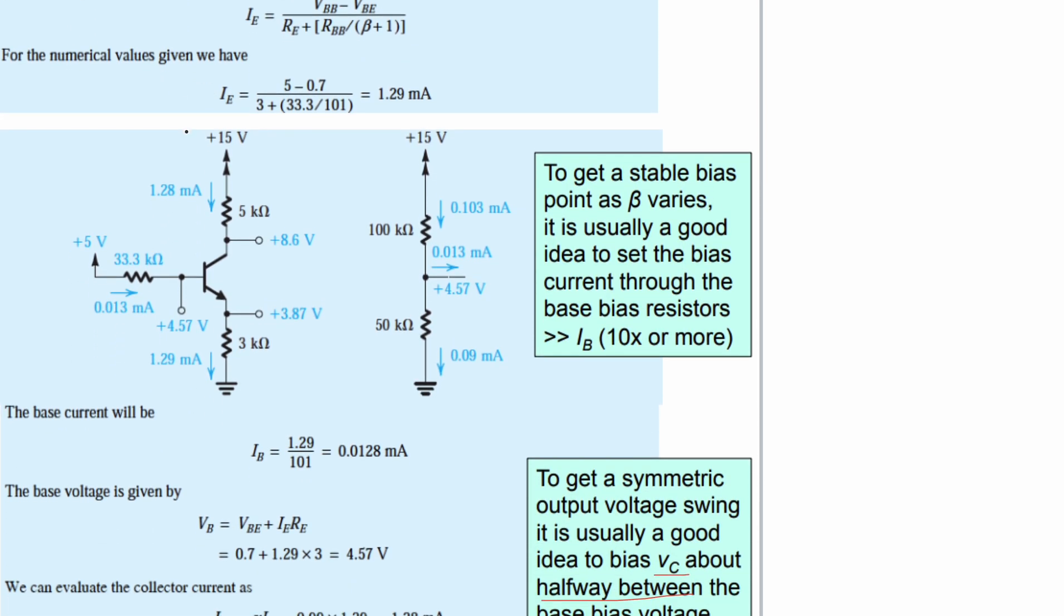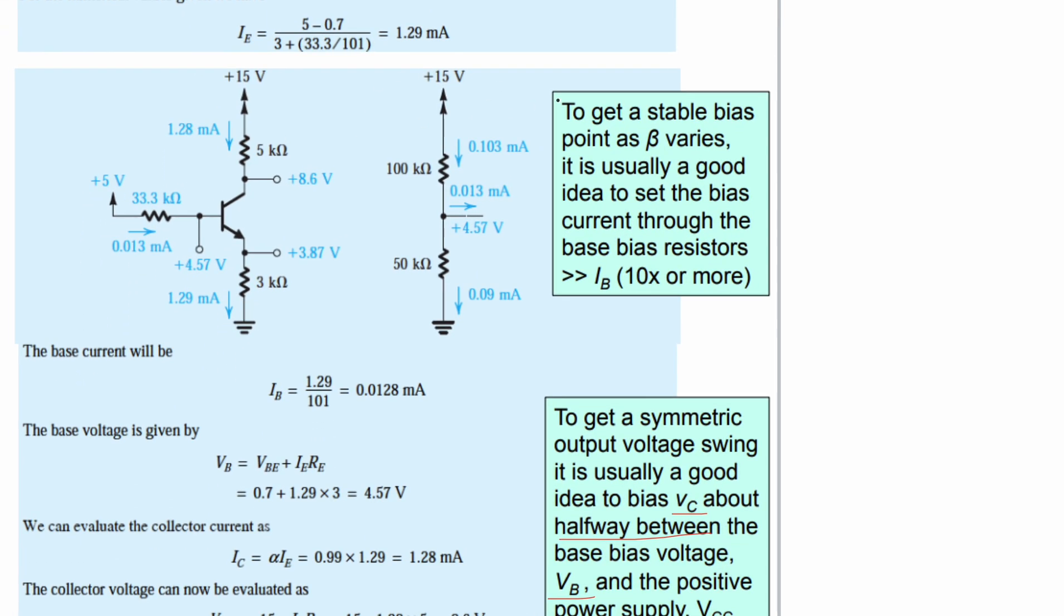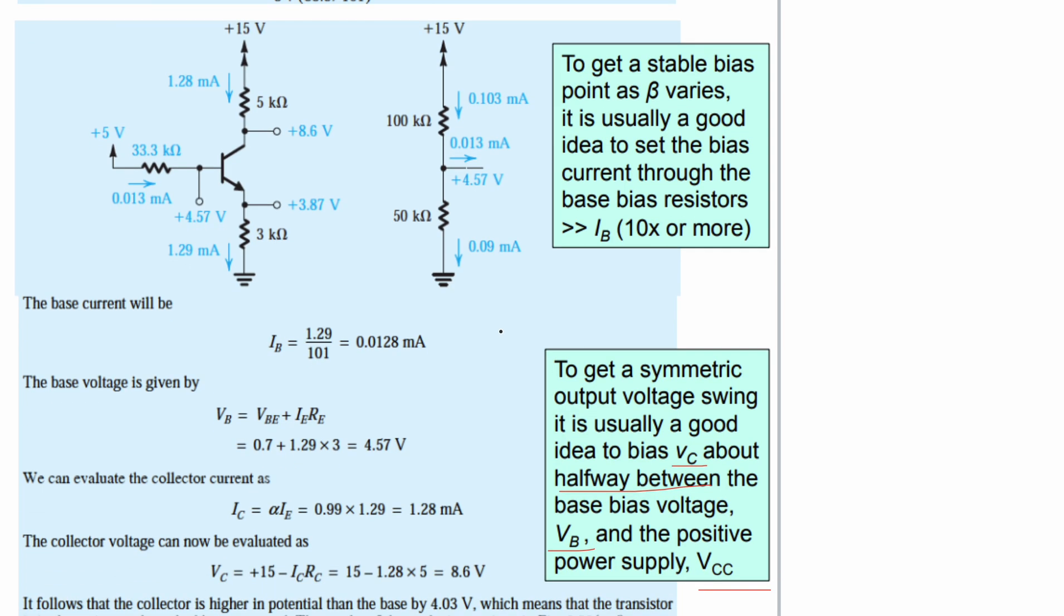Now to get a stable bias point as beta varies, it's usually good to set the bias current through the base bias resistors to be greater than our IB, 10 times or more. So it's not going to be too much affected. We can have our IB look like this, where we take the 1.9 and divide it by our beta, and it's going to give us this value right here.